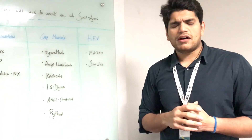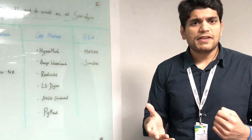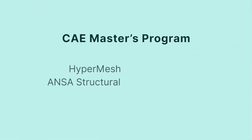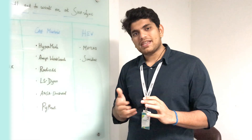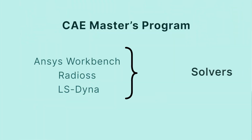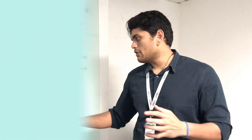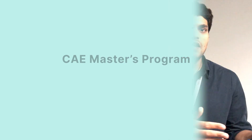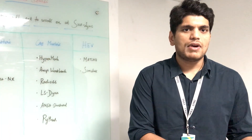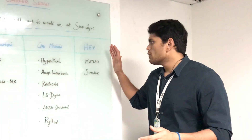If you go into CAE Masters — computer aided engineering — or FEA, finite element analysis, the tools you will be looking into are HyperMesh and ANSA for meshing, and ANSYS Workbench, Radioss, and LS-DYNA for solving, along with Python for pre-processing. These are the tools you will learn in our FEA or CAE Masters course.